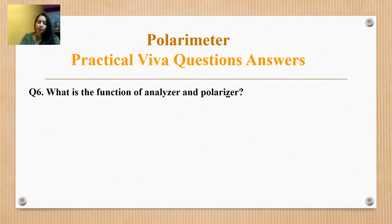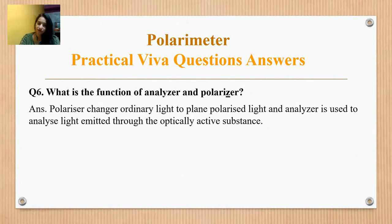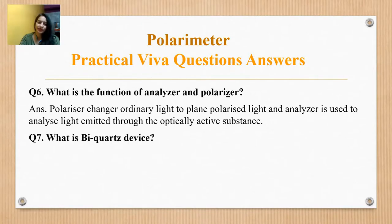What is the function of the analyzer and polarizer? The polarizer converts ordinary light — where vibrations are in all directions except the direction of propagation — into plane polarized light, where vibrations are in one direction. An analyzer is used to analyze the light emitted through the optical active substance.